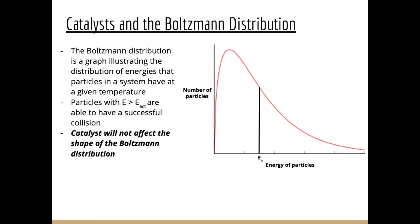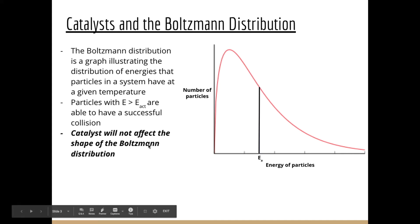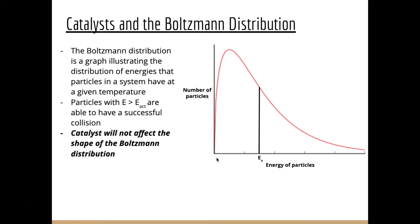Let's relate this to the Boltzmann distribution we looked at in the previous episode. The Boltzmann distribution is a graph illustrating the distribution of energies that particles in a system have at any given temperature, and it has this characteristic shape. Particles with an energy greater than the activation energy are able to have a successful collision — represented by the area to the right-hand side of the activation energy on the curve.